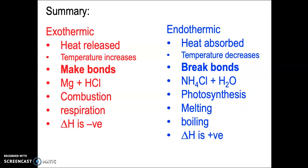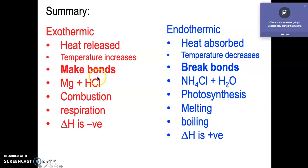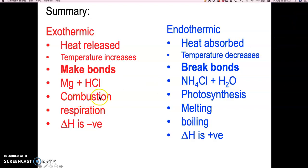To summarize exothermic reactions: heat is released, so if you put a thermometer in the test tube you'll see a temperature increase. This is because bonds are being made. Common examples you should be familiar with are combustion reactions — they all give out heat — and respiration, which includes breathing and exercising. We give out heat, and the delta H is always negative in these instances.